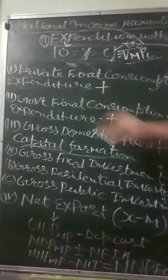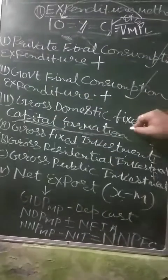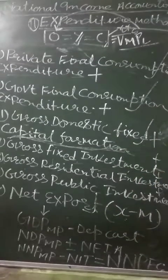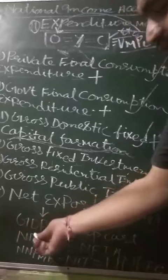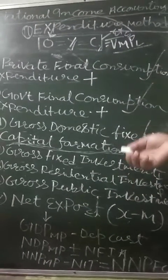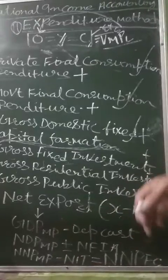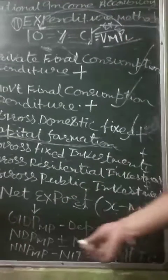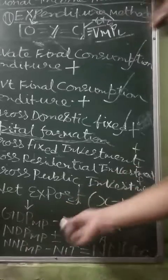After adding all four items — private final consumption expenditure, government final consumption expenditure, gross domestic fixed capital formation, and net export — we arrive at GDP at MP, gross domestic product at market price. This is because all expenditure is made at market price, which includes depreciation cost passed on by producers. It is 'domestic' because all expenditure is within one financial year within the domestic territory. However, GDP at MP is not national income, so we need to proceed further.